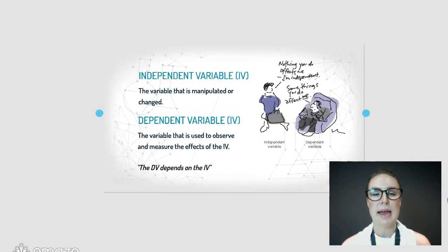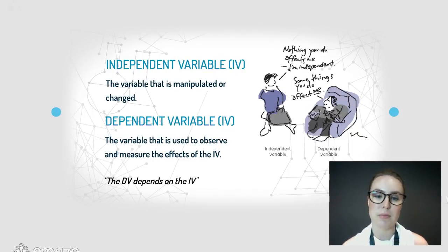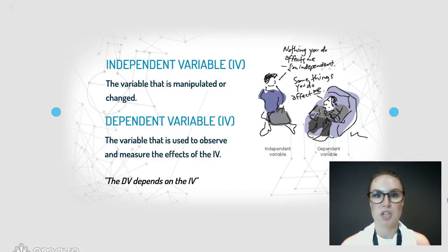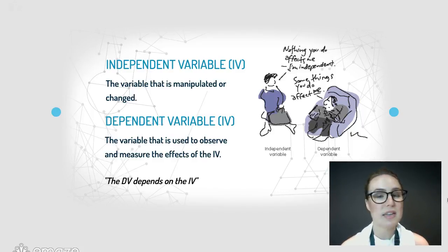The independent variable in an experiment is the variable — the thing that is manipulated and changed — whereas the dependent variable is used to measure the effects of the change in the IV. If you ever get stuck, just keep in the back of your mind the phrase that the dependent variable depends on the independent variable. This all sounds very wordy but once you start looking at scenarios it gets a little bit easier to understand.